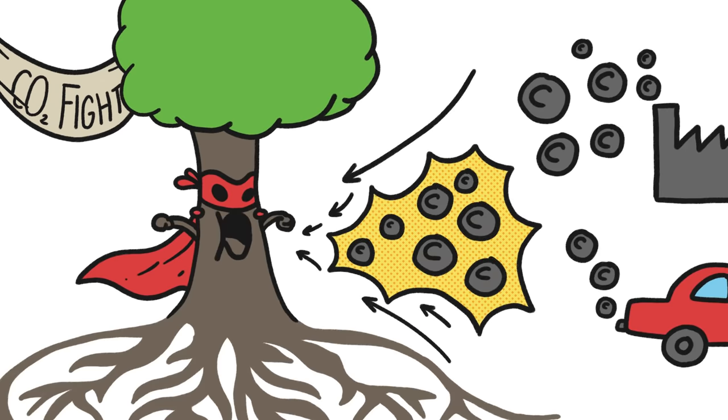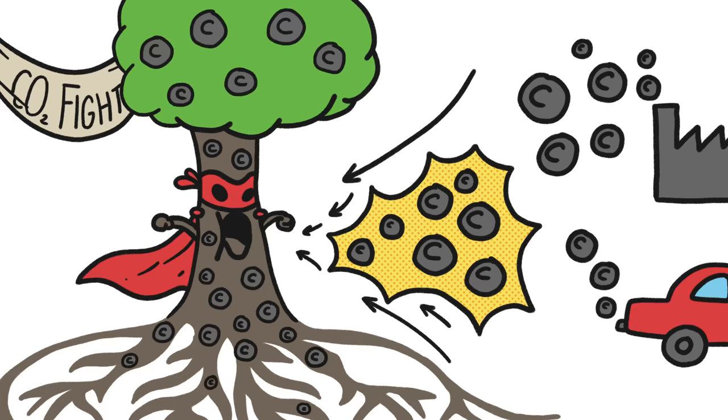This squad is fronted, of course, by trees, which suck millions of tons of planet-warming carbon out of the air each year and store it in their carbon-rich trunks, leaves, and roots.